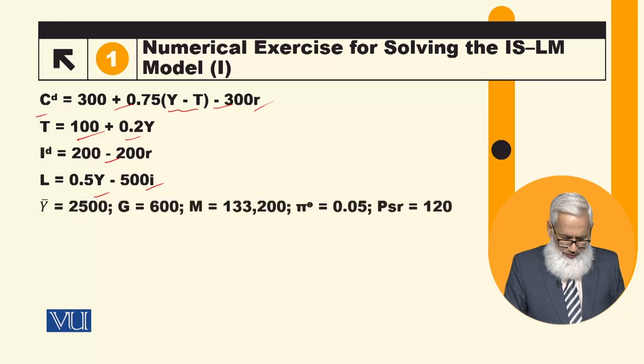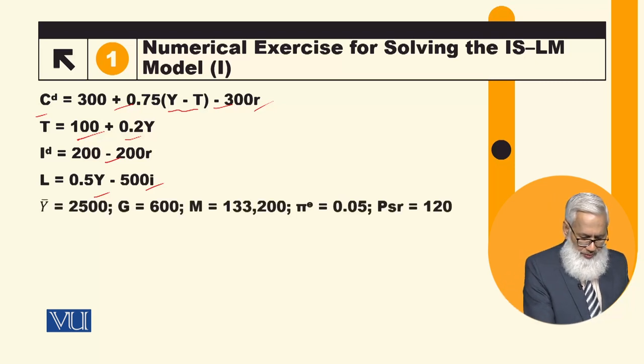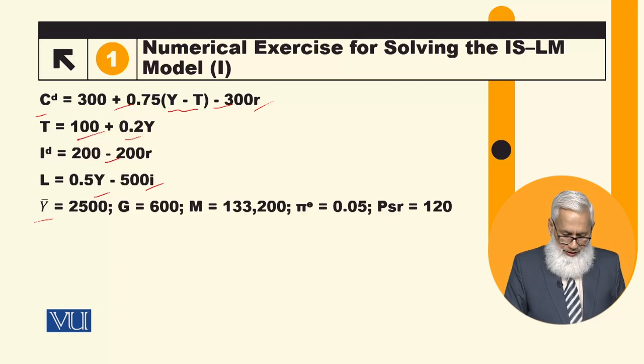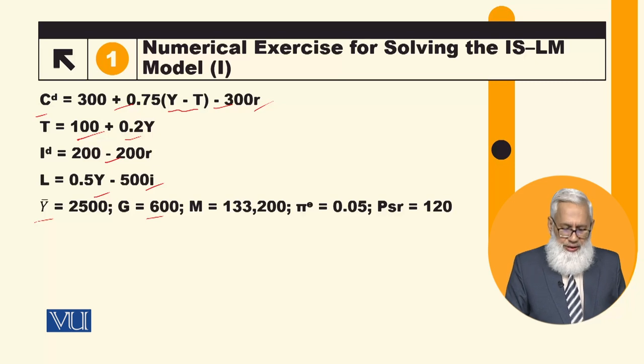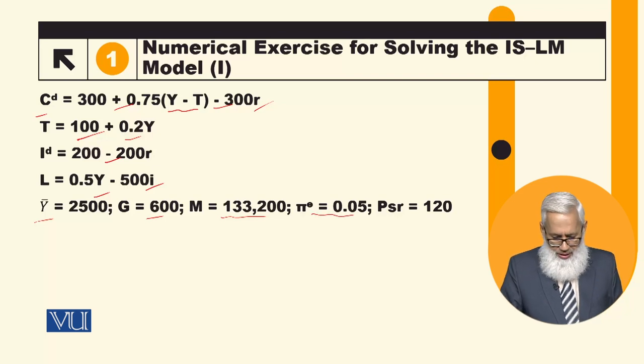Y bar is the full employment level of output, 2500. Government spending we have assumed is fixed at 600 level. M is the money supply, nominal money supply, which central bank fixed. This is the expected inflation rate, 5%. And this is the short-run price. We have talked about short-run prices being fixed, so we have assumed that short-run price is 120.